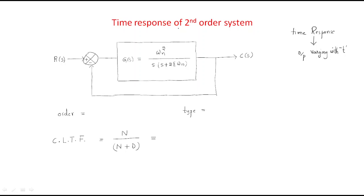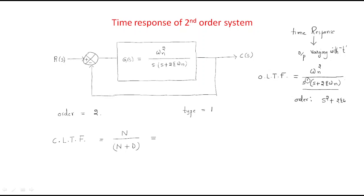In the previous case we discussed the first order system; here we cover the second order system. For the second order system, we start with the open loop transfer function and simplify to get the closed loop transfer function. The order is 2 and the type is 1 — the maximum degree of s in the denominator is 2.